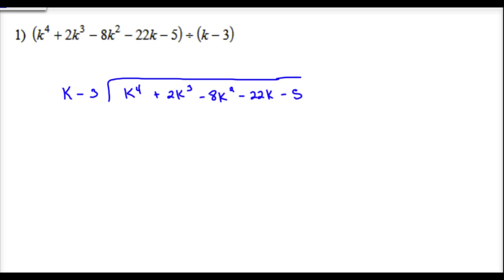What I want you to realize here is, if you look at your k squared that I'm dividing into, it goes k to the fourth, k to the third, k squared, k to the first, and then down to zero. So this is all going in descending order — the exponents of each one of your variables. k to the fourth, the next term is 2k to the third, next term is negative 8k squared. It goes down by one, and it has to go in that descending order.